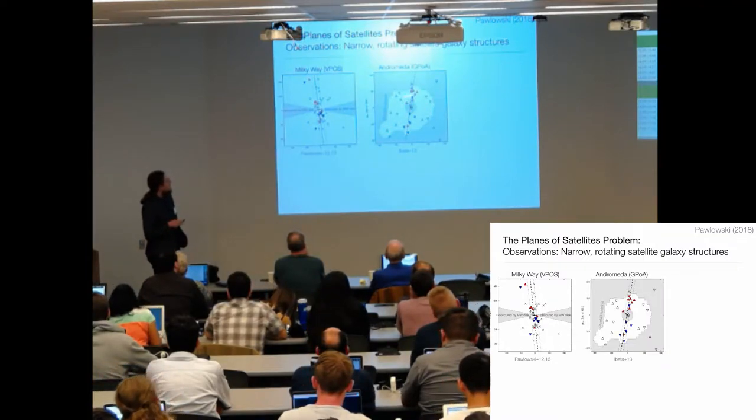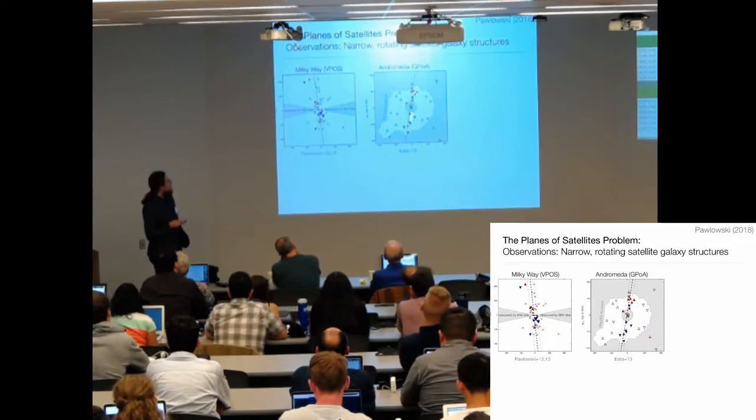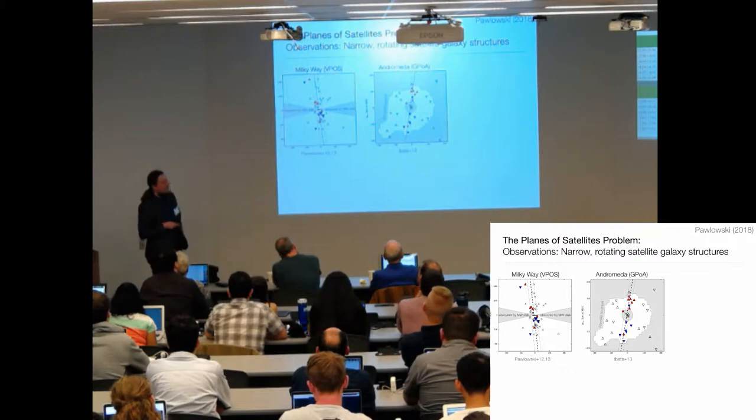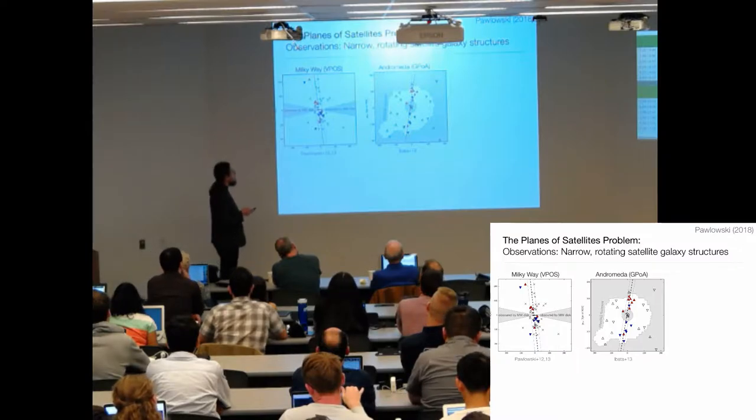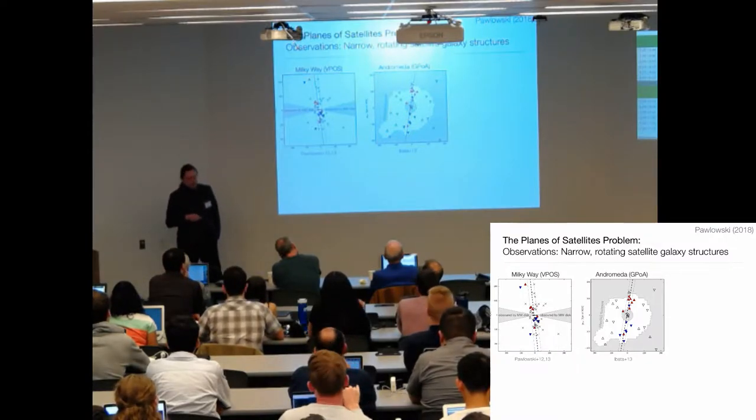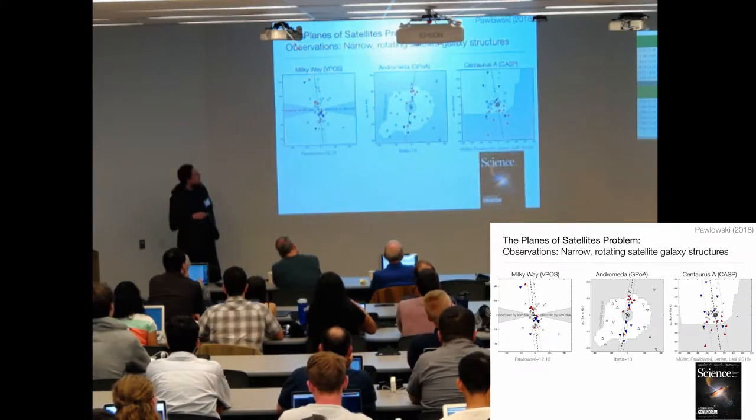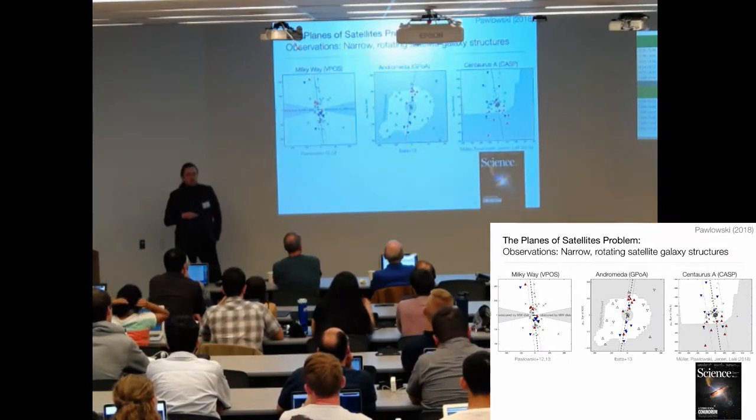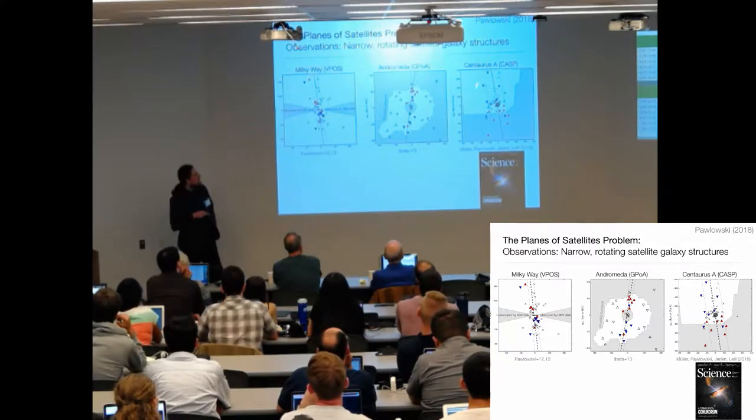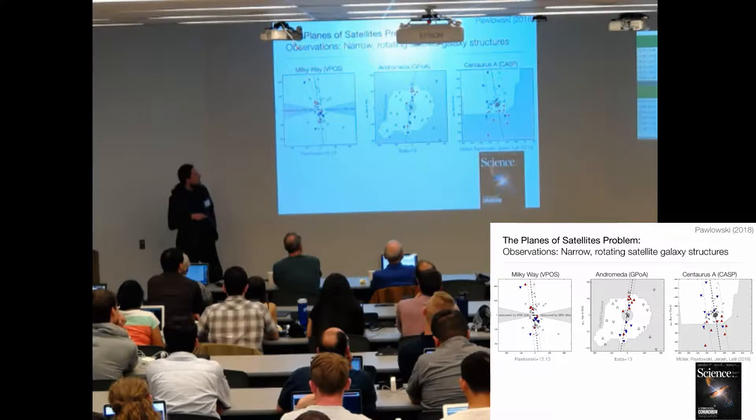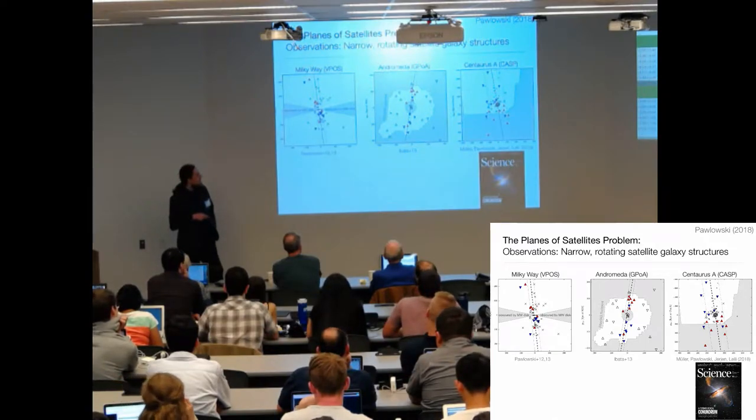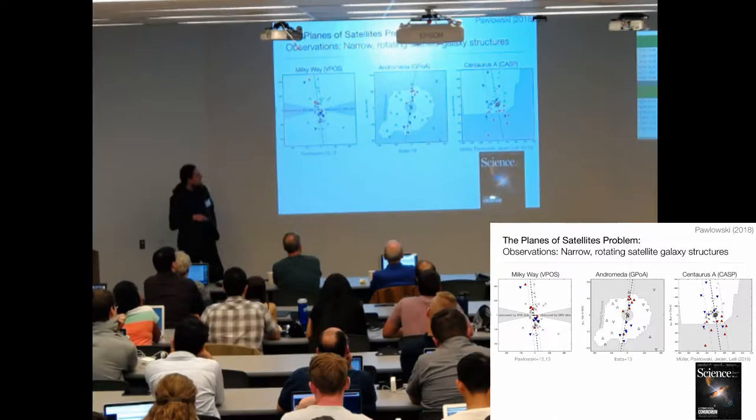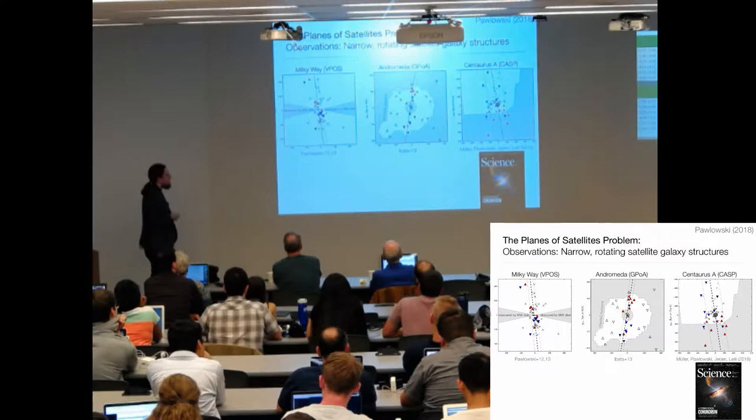A similar system was found around Andromeda. This is the Andromeda galaxy in the center with its satellite galaxies, about half of them are part of a highly flattened distribution which seems to be rotating again. Earlier this year we published about the Centaurus A satellite system. Out of 16 satellites, 14 show coherent velocity trend consistent with a rotating plane. Science put us on the cover.